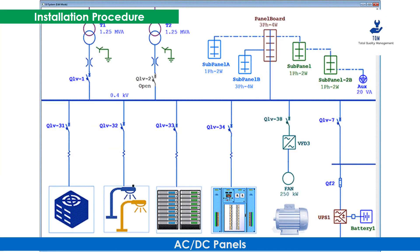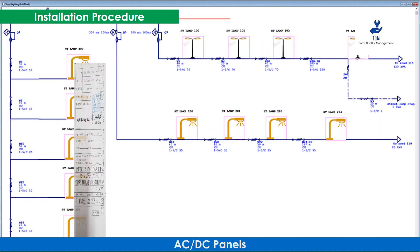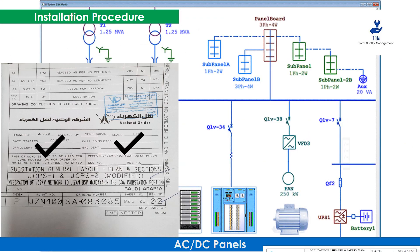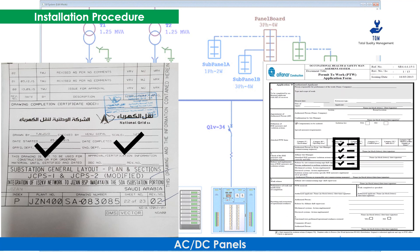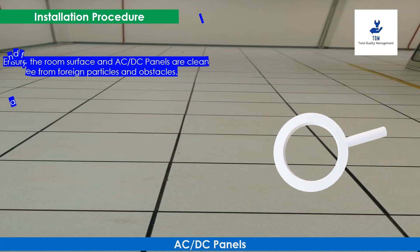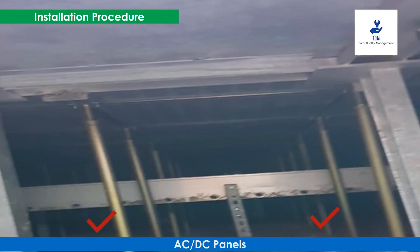The step-by-step installation procedure is as follows. First, ensure that approved layout and installation drawings are available for the work, and obtain all applicable work permits before starting the activity. Ensure the room surface and AC and DC panels are clean and free from foreign particles and obstacles. Check that the panel support structure is properly fixed on the floor, and verify the level and alignment of the support base.